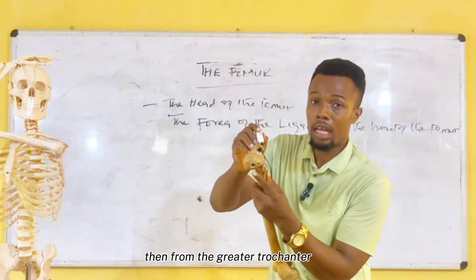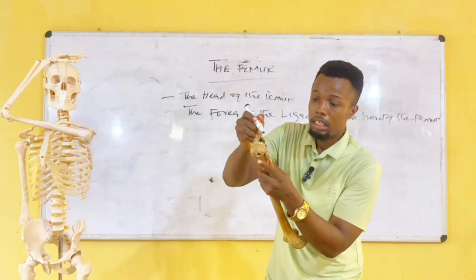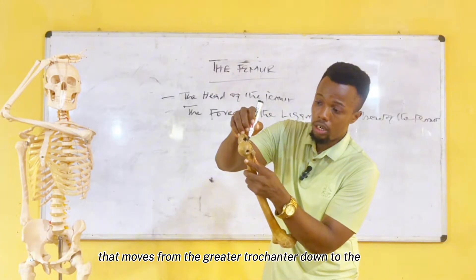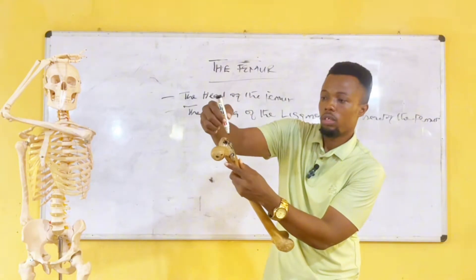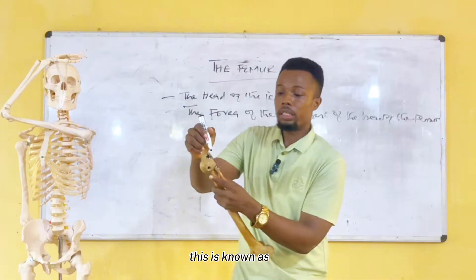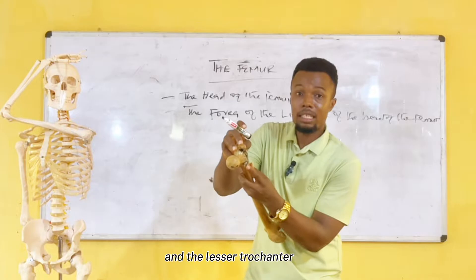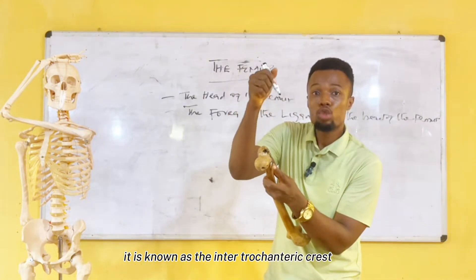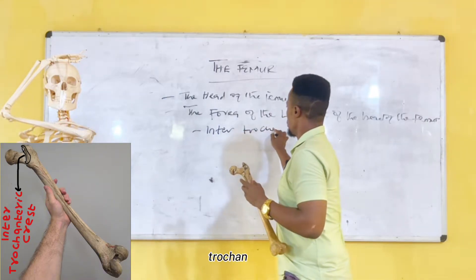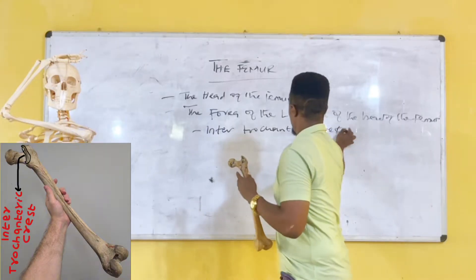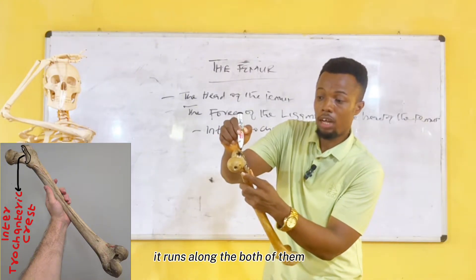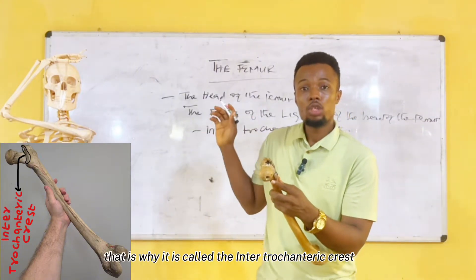From the greater trochanter down to the lesser trochanter, there is a protrusion in the form of a crest or a line that moves from the greater trochanter down to the lesser trochanter. Because it is in between the greater trochanter and the lesser trochanter, it is known as the intertrochanteric crest.